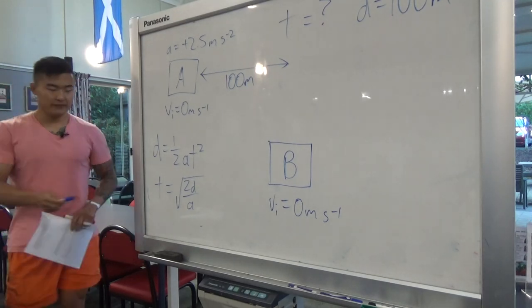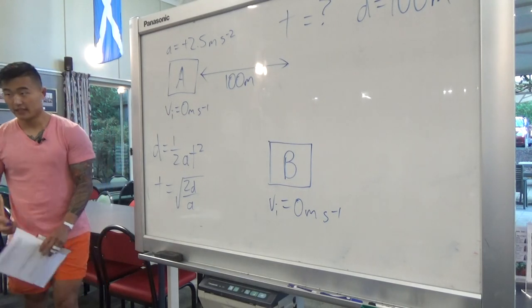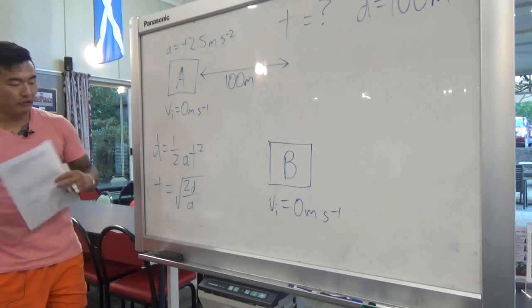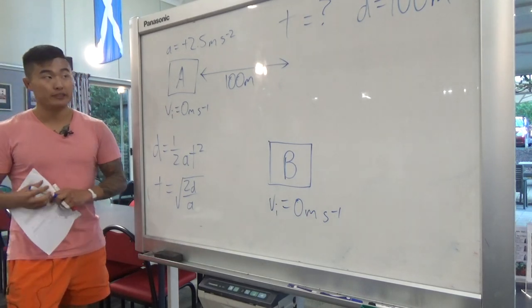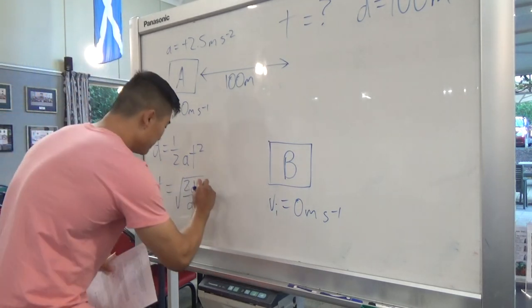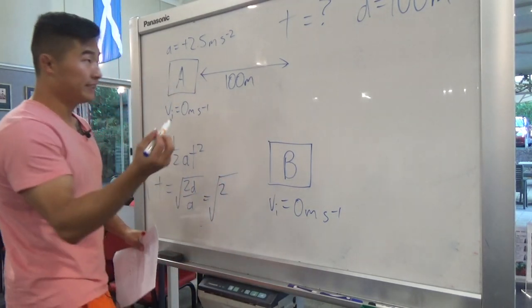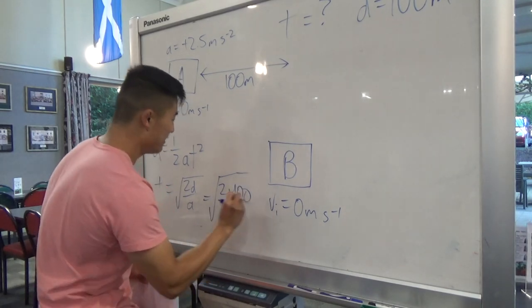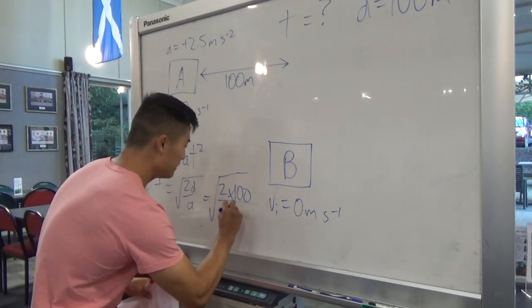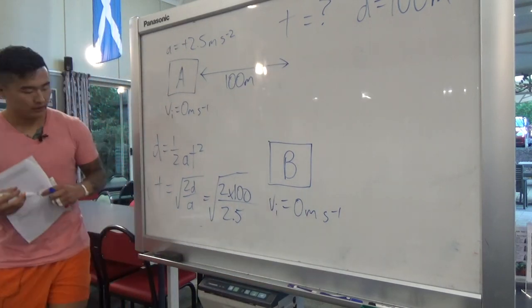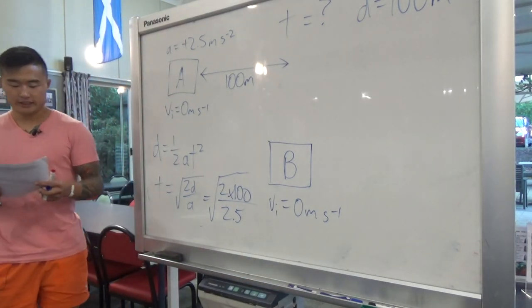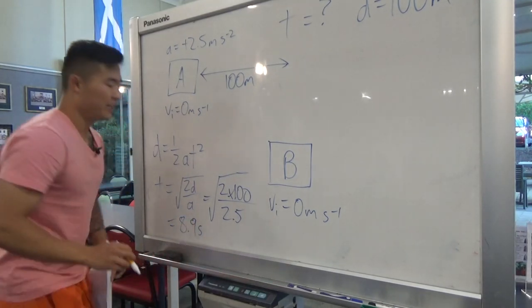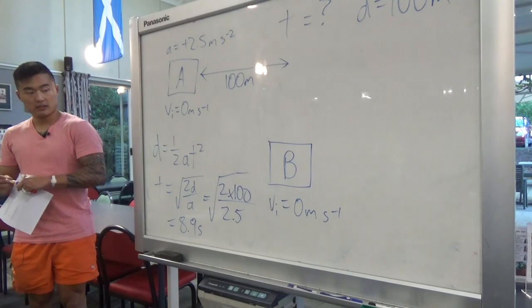I'd recommend having these pre-rearranged equations on your cheat sheet because they'll come up quite a bit. Now we substitute our numbers: the square root of 2 times 100 over 2.5. The answer should be 8.9 seconds.